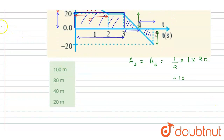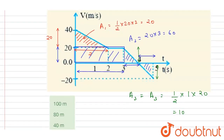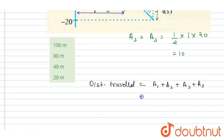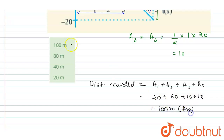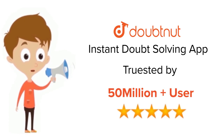Now add all the areas to get the total distance traveled: A1 plus A2 plus A3 plus A4 equals 20 plus 60 plus 10 plus 10, which equals 100 meters. So option A is the correct answer. Thank you. For class 6 to 12, IIT JEE, and NEET level, trusted by more than 5 crore students — download DoubtNut today.